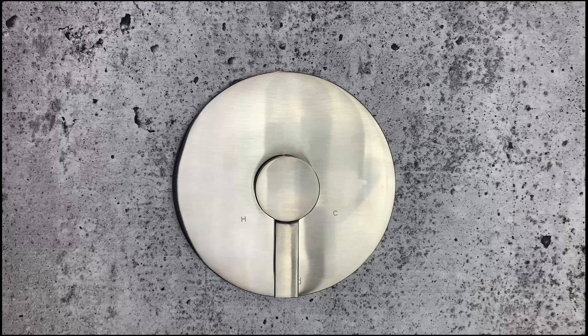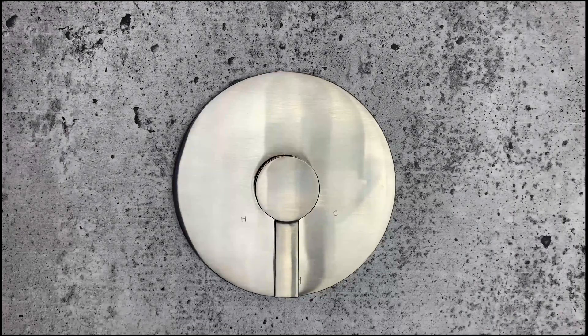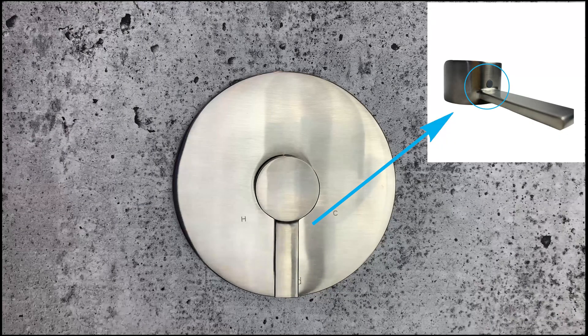This video will show you how to replace the pressure balancing cartridge of a Fluid F1001B non-diverting valve. To gain access to the cartridge, you first need to remove the shower handle.